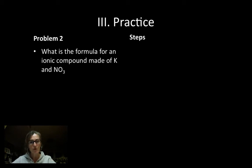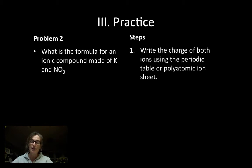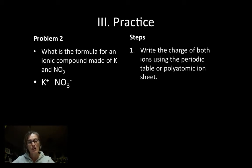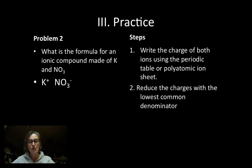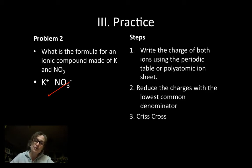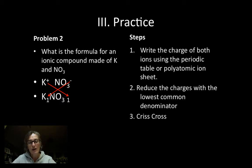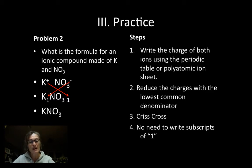Problem number two: what is the formula for an ionic compound made out of potassium and NO₃, the polyatomic ion named nitrate? First, I write the charge of both ions. Potassium is an alkali metal and has a plus one charge, and NO₃ nitrate has a minus one charge. I reduce the charges with the lowest common denominator — these are already reduced, one and one. Then I crisscross. The charge on the anion becomes the subscript for my cation, and the charge for my cation becomes the subscript for my anion, giving K₁NO₃₁. Since both subscripts are one, I don't need to write them, so my formula will be KNO₃.